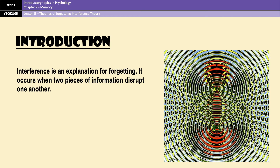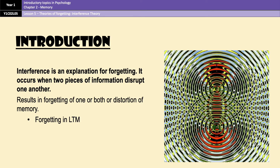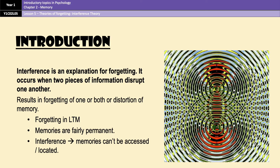Interference theory is a theory of forgetting in long-term memory, and it's one of two theories of forgetting that you need to know, with the other one being retrieval failure, which is the next video. Interference theory suggests that forgetting in long-term memory can occur when two pieces of information conflict with one another, which can result in not being able to access either one or both pieces of information. Information in long-term memory is fairly permanent — it doesn't mean memories are gone forever, just that we can't find them at this moment, or that they've become distorted because of another piece of information.